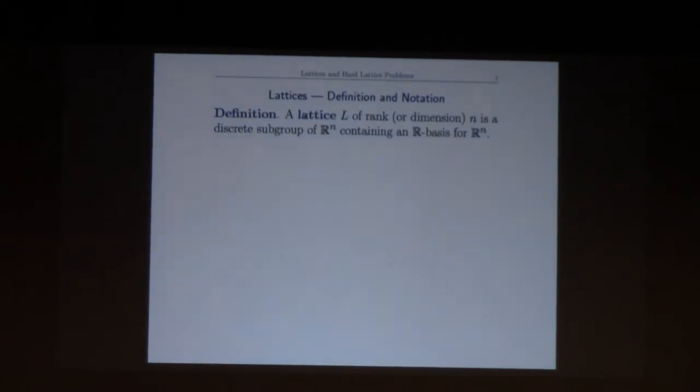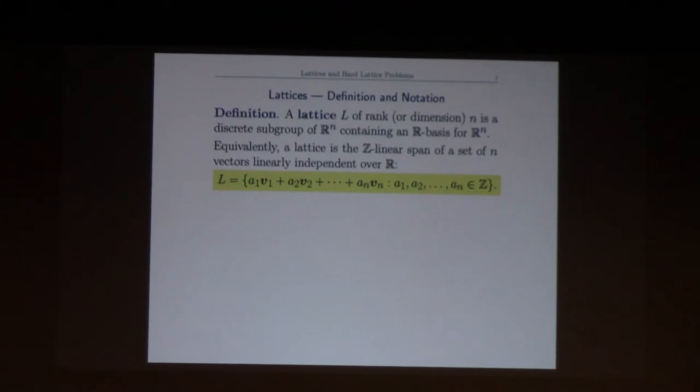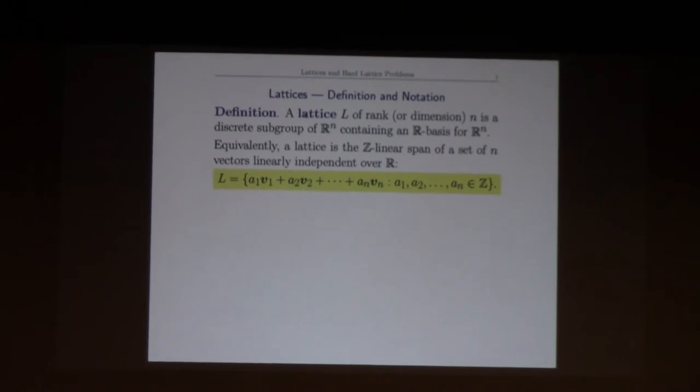A lattice of dimension n is a discrete subgroup of n-dimensional real space—sort of a regularly arranged space of dots or vectors. Another way to say it is just pick n linearly independent vectors in R^n. In linear algebra, you're used to taking the R linear spans of those, but here I'm just going to take the spans with integer coefficients, so now you get a discrete set of points.